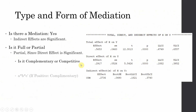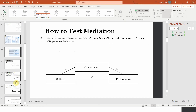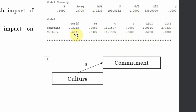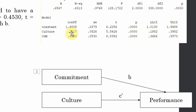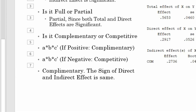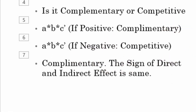Is it complementary or competitive mediation? Multiply A by B by C: path A is 0.6041, path B is 0.4530, and C complement is 0.2917. All three are positive, so the product is positive — this is complementary mediation. If one of them had a negative sign, this would mean competitive mediation. In this case, the sign of the direct and indirect effects is the same, so this is complementary mediation.